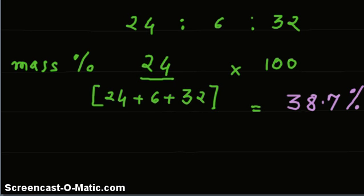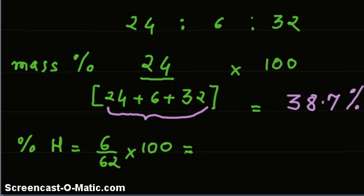Now, in the same way, for hydrogen, it would be 6 divided by 62 times 100. That is equal to 9.7%.